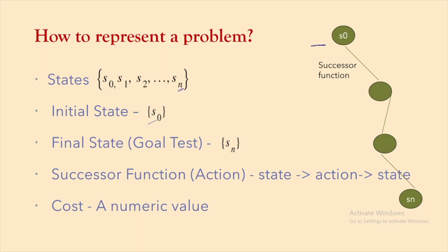The initial position is S0 and the final state is Sn. This representation is taken from the goal-based agent where goal plays a role. We have an initial state and a final state, and how to reach from one to the other is by means of the successor function — also called actions in some books. An action is represented as an edge. From S0 we perform an action to get state S1, then another action to get another state.